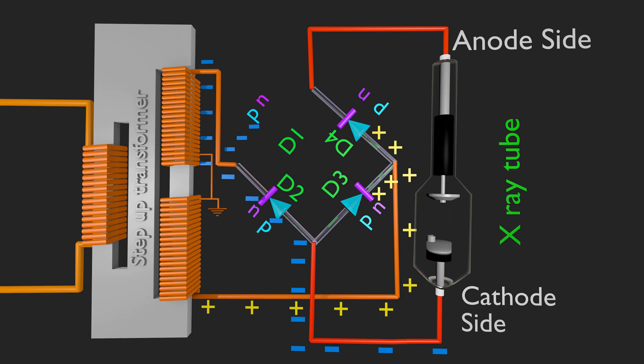D3 will be in reverse bias condition as N side of D3 is connected to positive polarity. Hence D3 does not conduct electricity. D4 is now in forward biased condition as p side of it connected to positive polarity. Anode of X-ray tube will again have a positive polarity through D4.